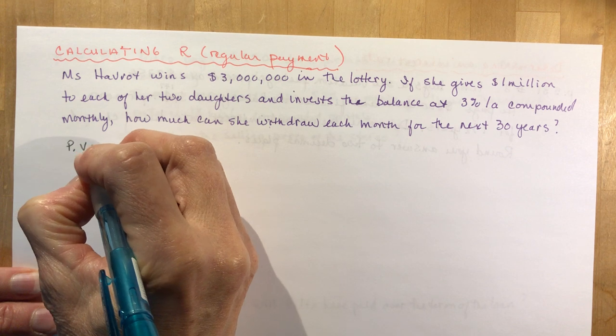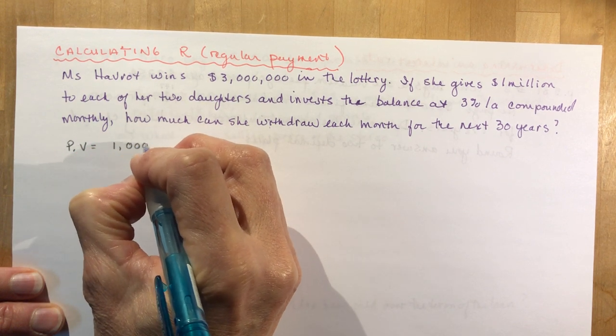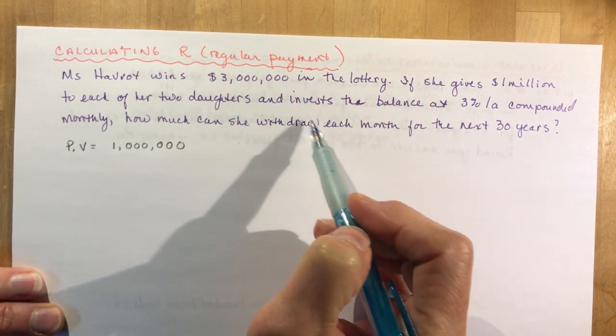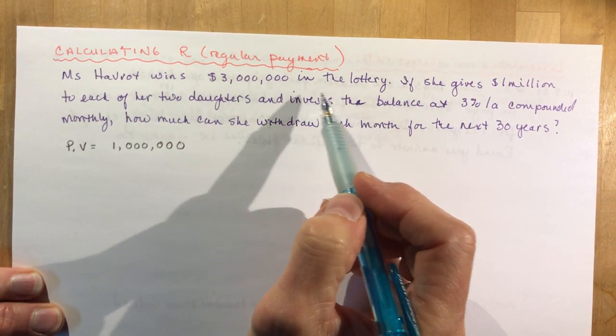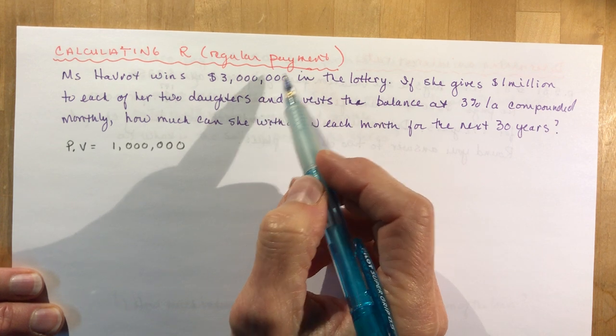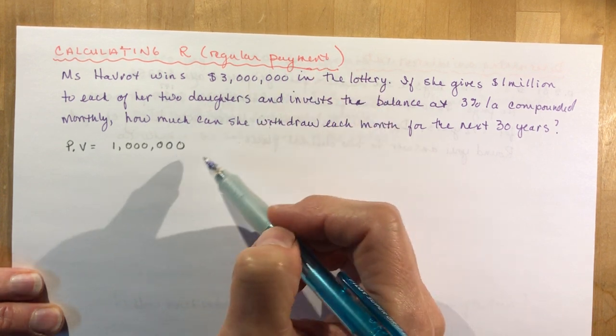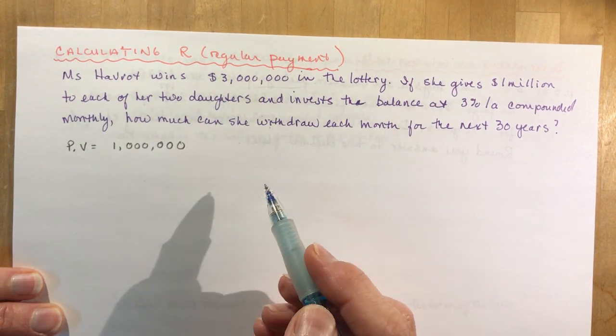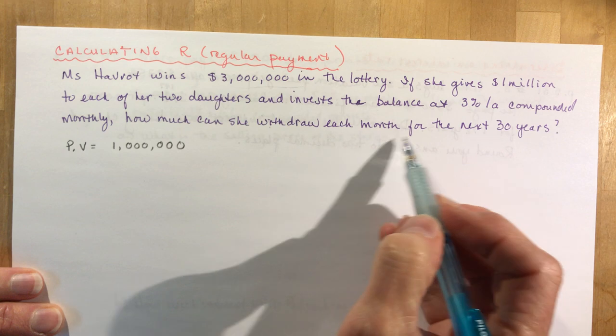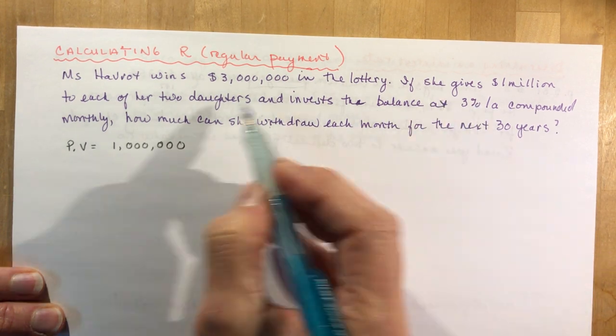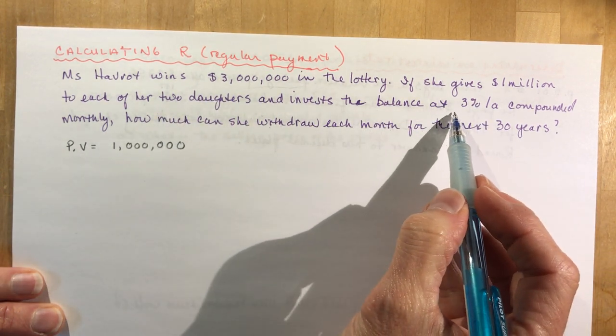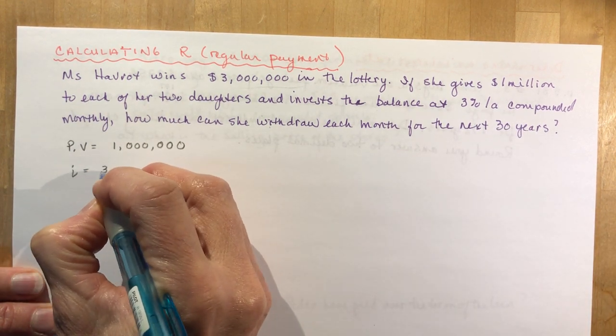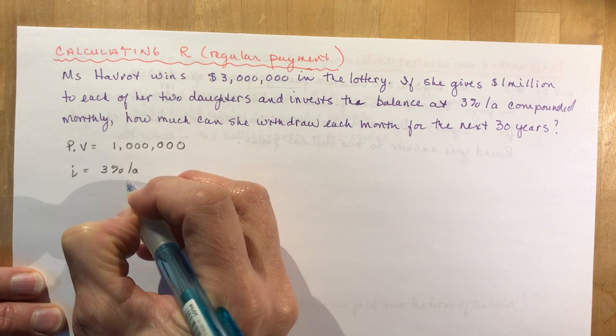Sometimes you'll get questions that have this sort of, you know, whether you're making a down payment or giving something away. Make sure that you make your adjustment. Don't just start using numbers that you see without thinking about how they should be interpreted in the question.